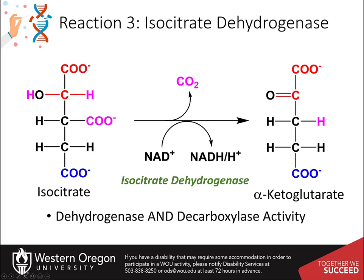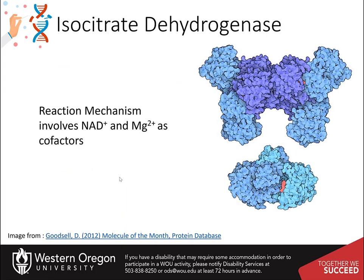Within the citric acid cycle, isocitrate, produced from the isomerization of citrate, undergoes both oxidation and decarboxylation to form alpha-ketoglutarate. CO2 is released and a molecule of NADH is formed in the process. This is accomplished by the isocitrate dehydrogenase enzyme. Note that the enzyme is named for its oxidation role, not the decarboxylation step.